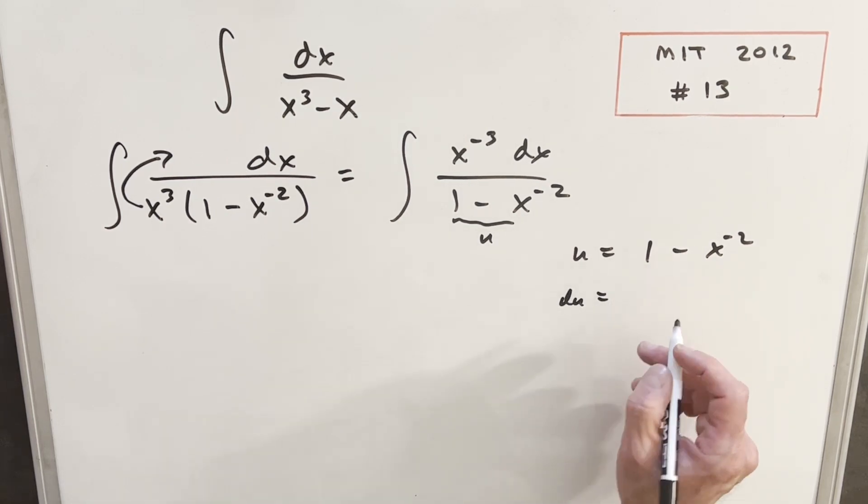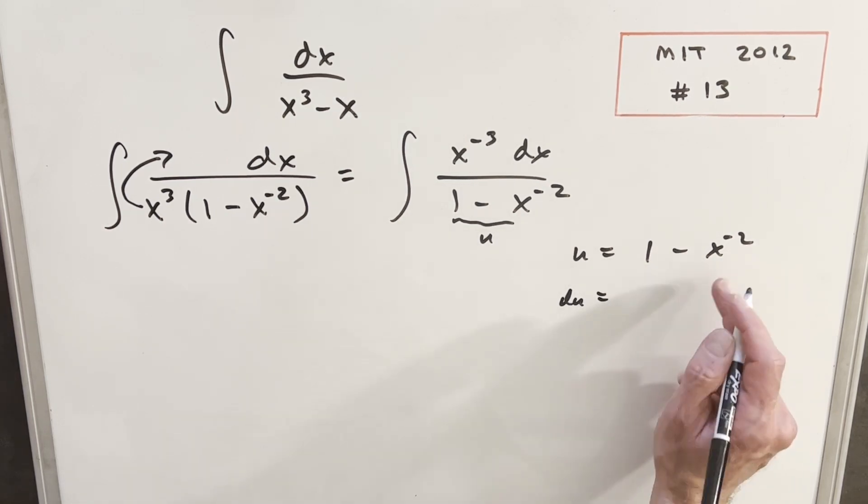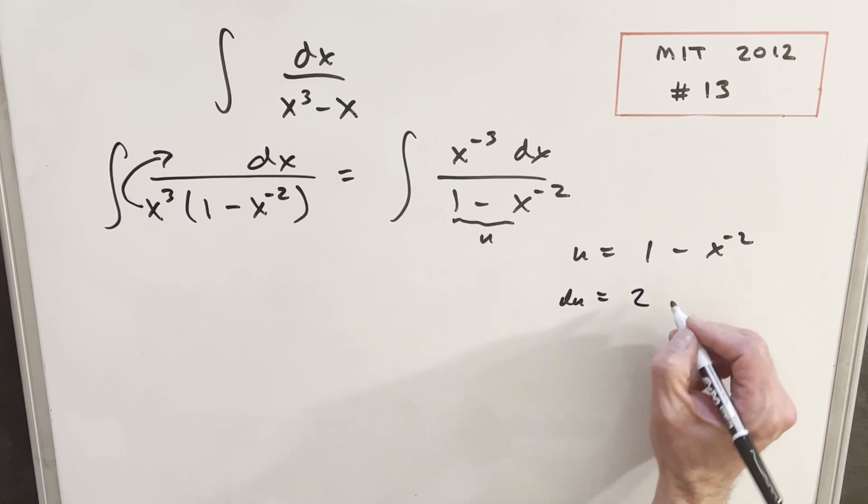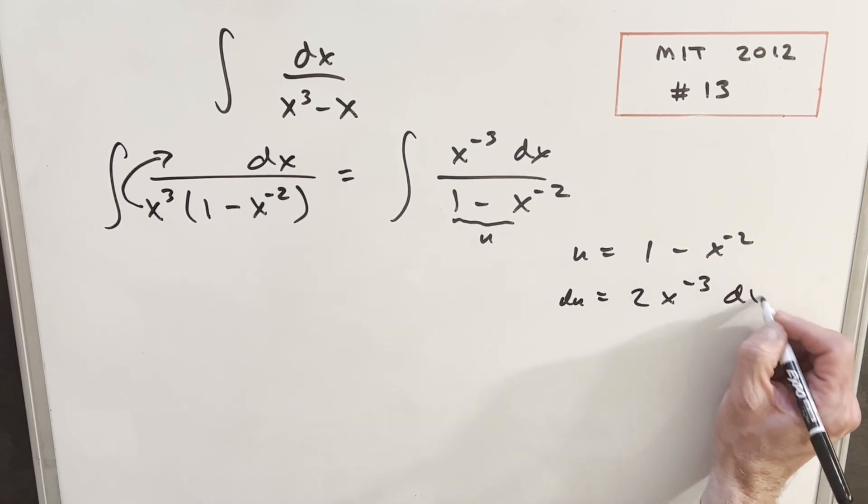So du is going to be, derivative of 1 is zero. This is going to be, just using the power rule, we're going to have 2 x to the minus 3 dx.